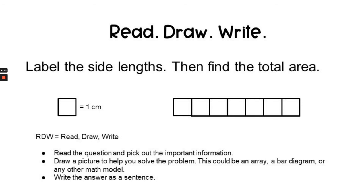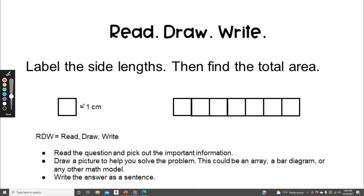So the read-draw-write question is, label the side length, then find the total area. Each square is one centimeter. You can pause the video now and do your work, and I'll see you in the next video.